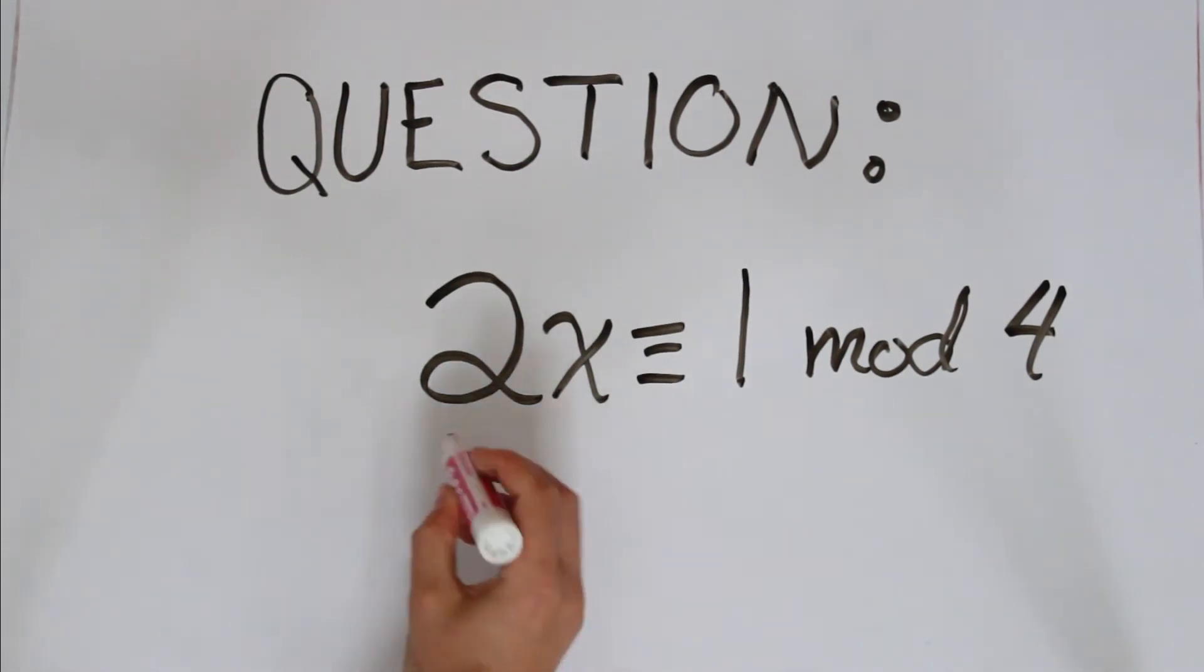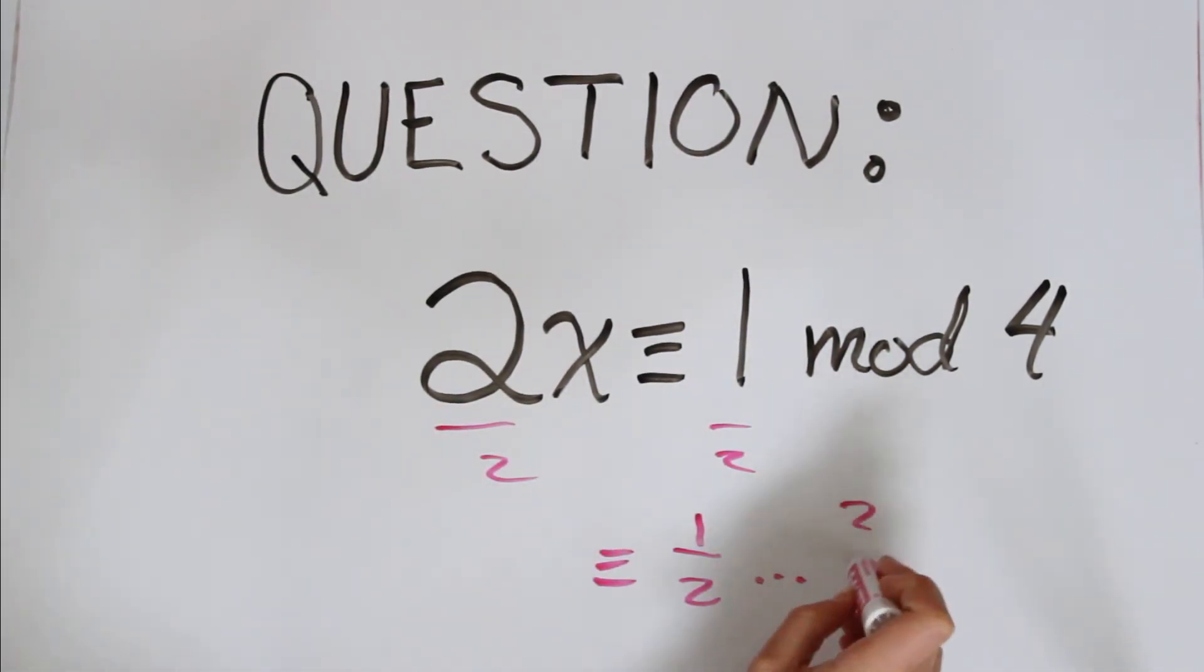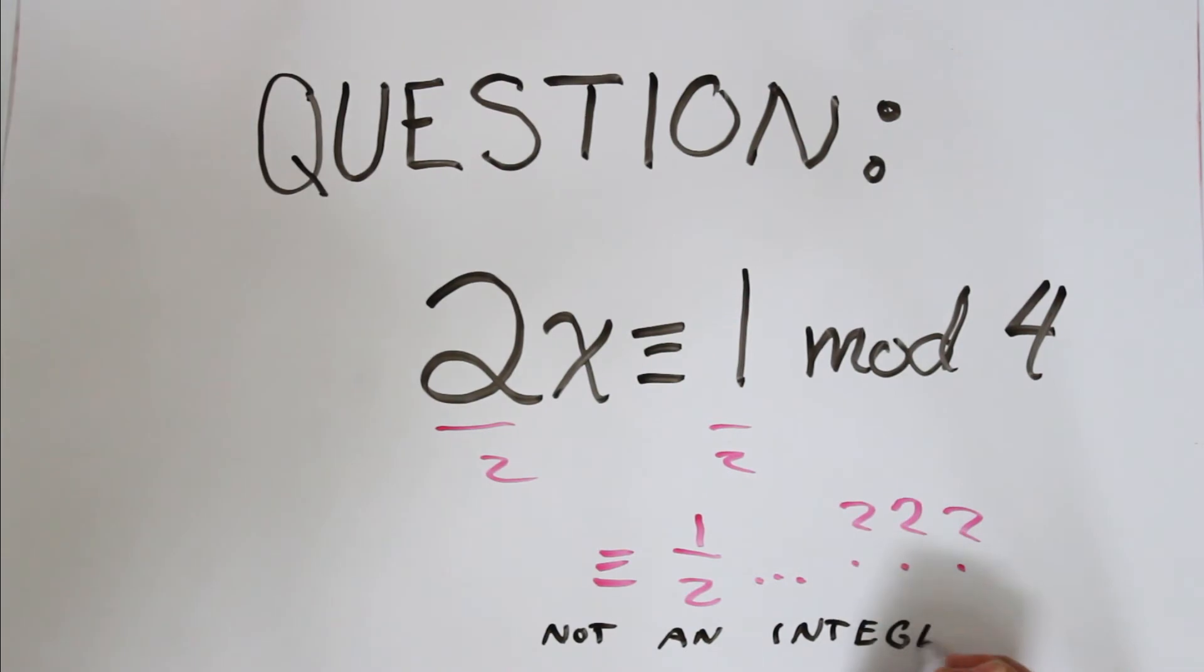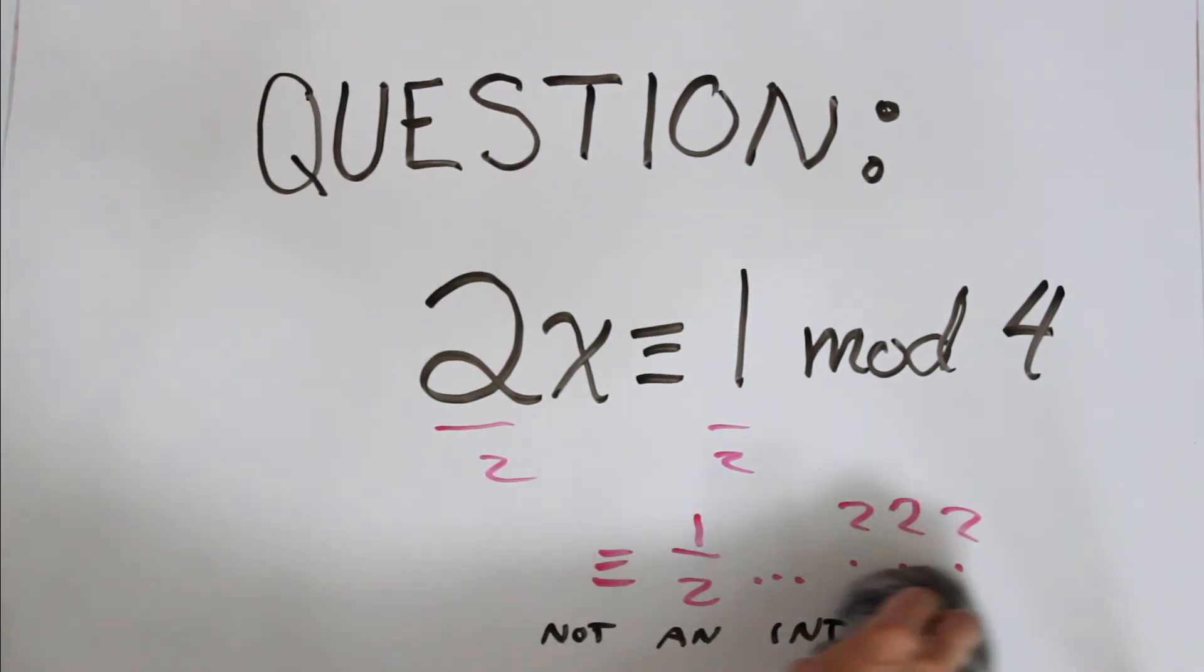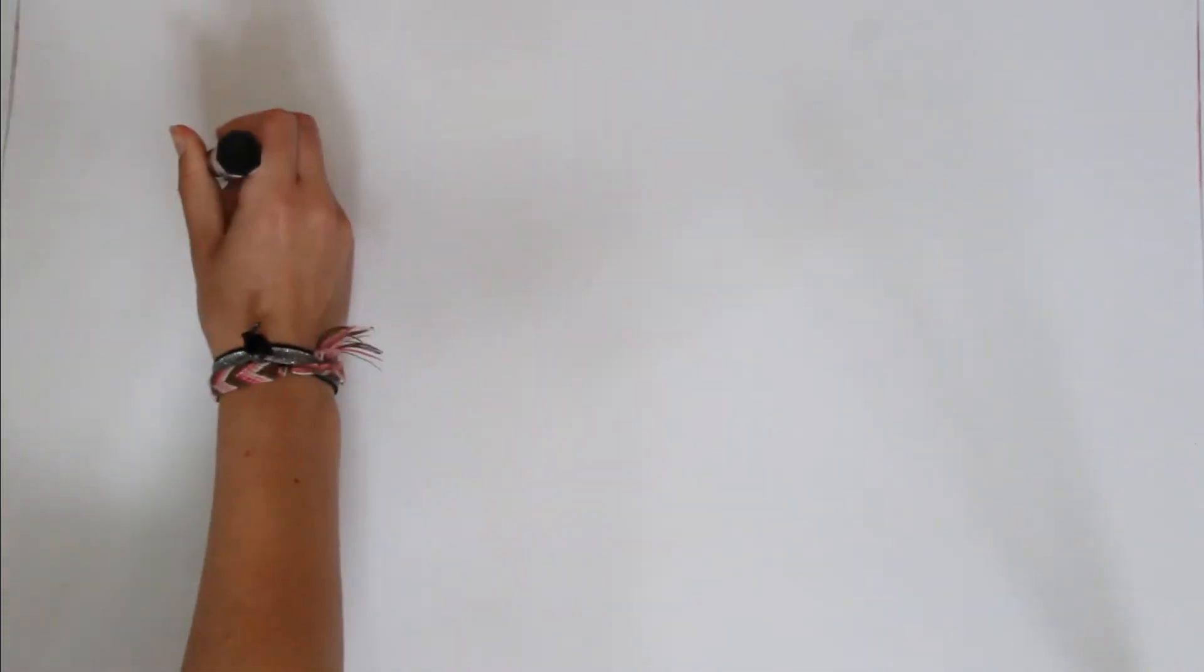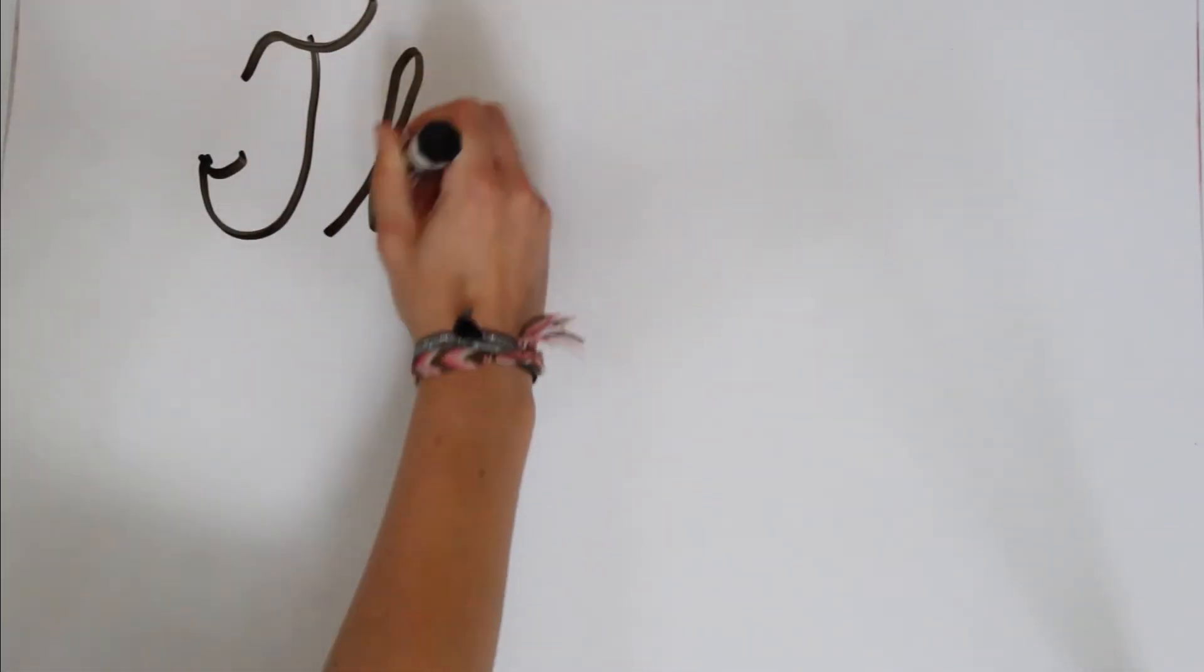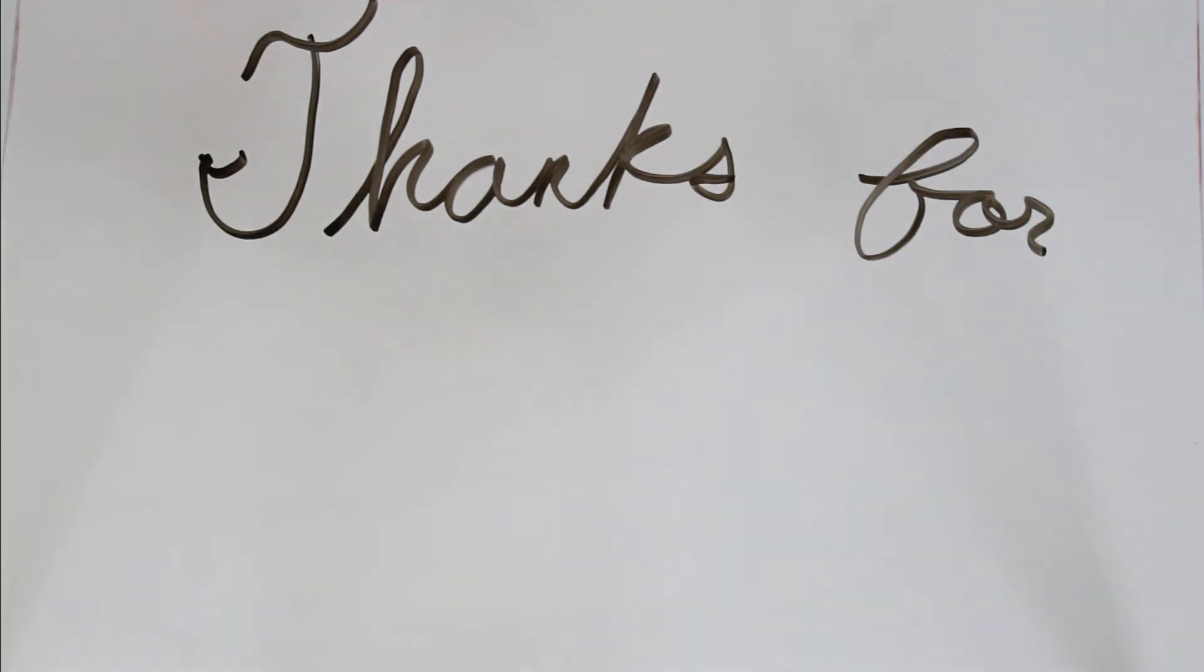We can't divide by 2 because then we get one half, and one half is not an integer, so it doesn't exist in the mod world. So that's my question: how do you solve this? We'll go over this next time, and I appreciate you all for watching this video. I'm super excited to share my love for mod with you guys.